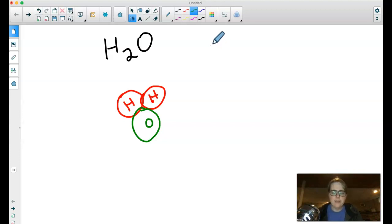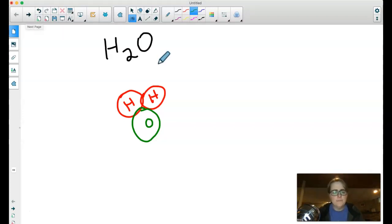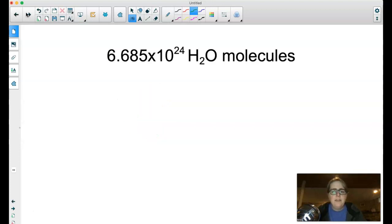Now there's some limitations on thinking that way. So for example, if you have a glass of water, if you were to sit down and count every single molecule of water, so every single time you have two hydrogen atoms and one oxygen atom. This is how many molecules of H2O are in a typical glass: 6.685 times 10 to the 24 molecules. That is a lot.